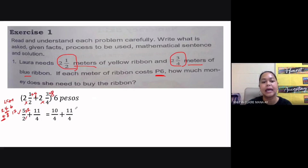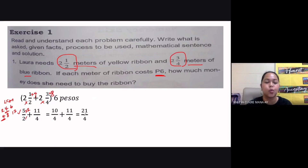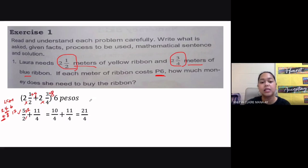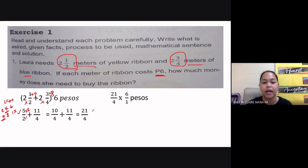Adding ten and eleven, we get twenty-one over four. So twenty-one over four is the total meters of ribbon that Laura needs. Now we proceed with the second part of our solution.